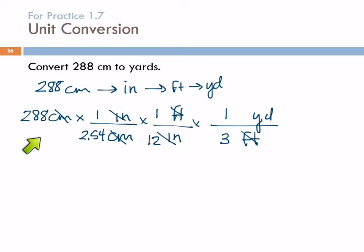To do this on your calculator, I recommend that you just start at the left side and go across. 288 times the top, divide by the bottom, times the top, divide by the bottom. Of course, multiplying and dividing by one doesn't change anything. But some students feel more comfortable putting it in there.